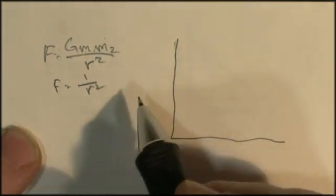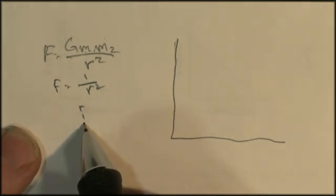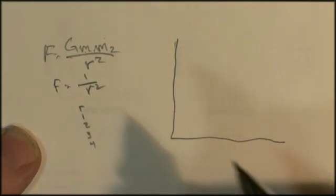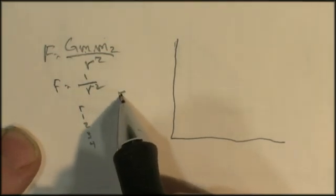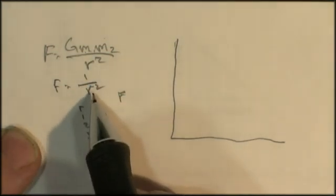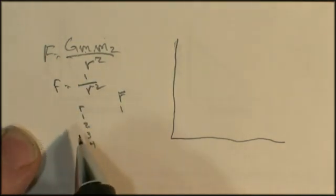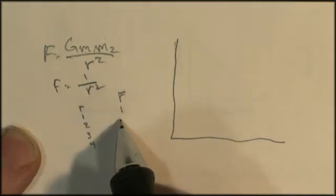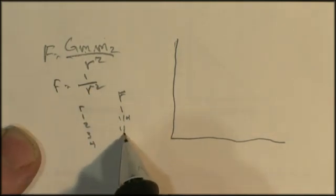And so now I put in some pretend numbers. Let's see, my distance can be 1 or 2 or 3 or 4. And then what would my force be? Well, that would be 1 divided by 1 squared would be 1. 1 divided by 2 squared, that would be a 4th. 1 divided by 3 squared, that would be a 9th.